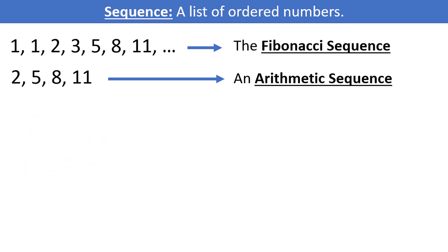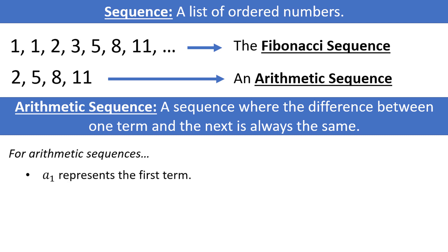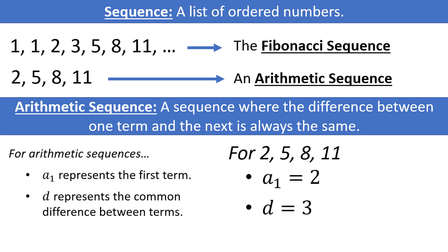The definition of an arithmetic sequence is a sequence where the difference between one term and the next is always the same. For arithmetic sequences, a sub 1 represents the first term, and d represents the common difference between terms. So for our sequence of 2, 5, 8, and 11, a sub 1 is equal to 2, as 2 is the first term, and d is equal to 3, as the difference between any two adjacent terms is 3.